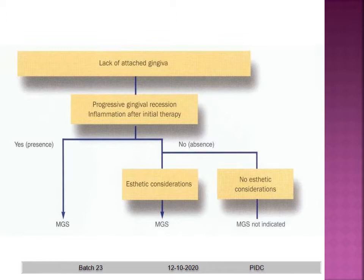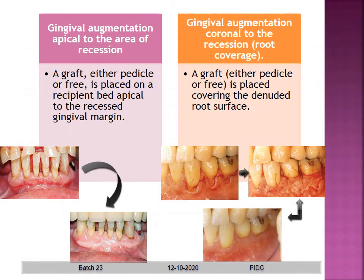Whenever there is a lack of attached gingiva after therapy, and you find there will be progressive gingival recession or inflammation, then mucogingival therapy is needed. If aesthetic considerations exist even without these concerns, you can proceed with mucogingival therapy; if no aesthetic considerations are present, it is not indicated. There are two surgical procedures: gingival augmentation apical to the area of recession, and gingival augmentation coronal to the area of recession — the latter is known as a root coverage procedure.